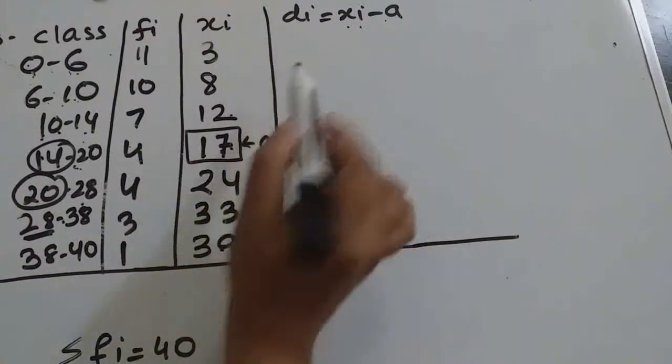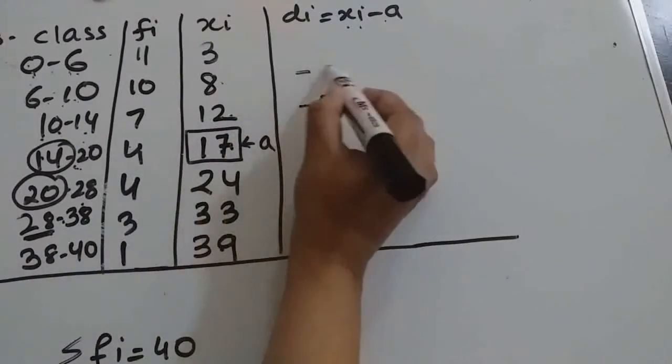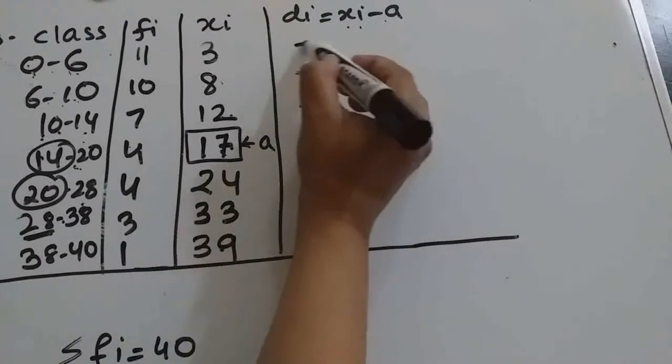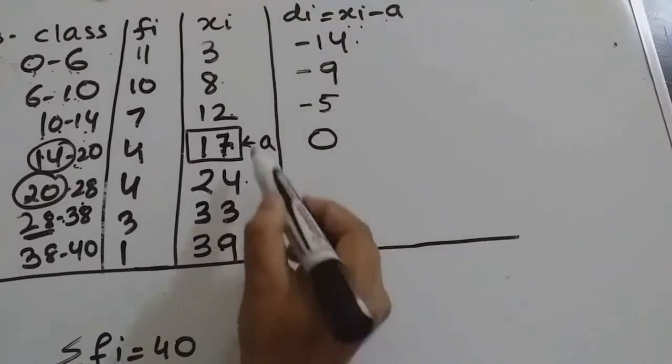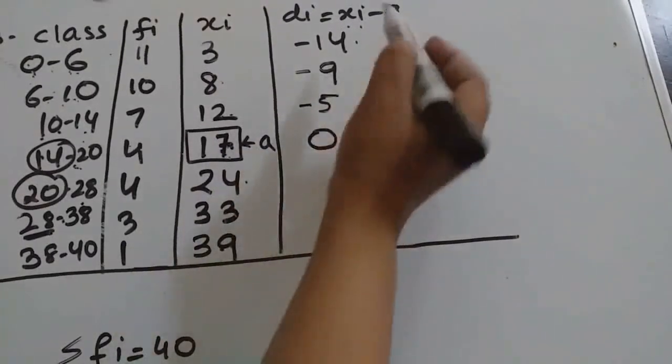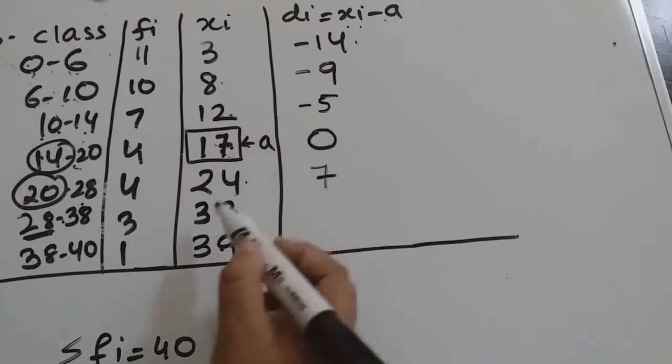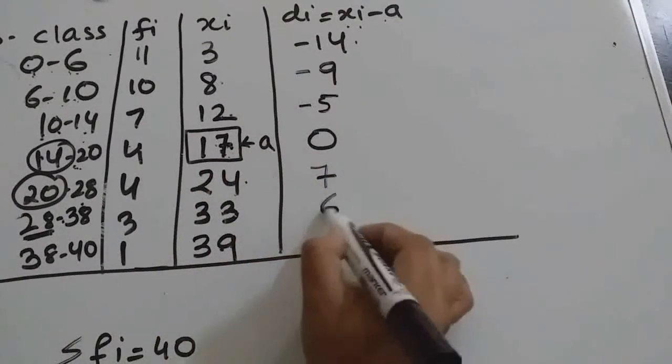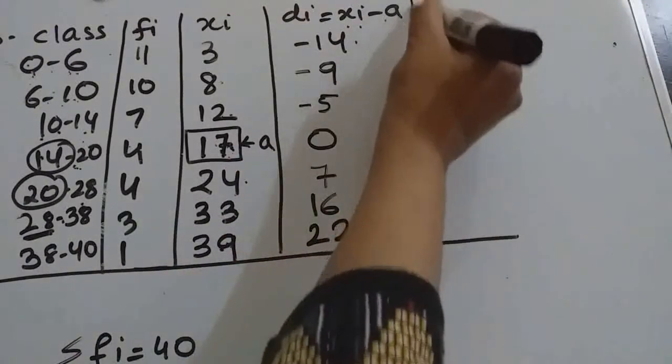Now for the above observations: 12 minus 17 means minus 5. 8 minus 17 means minus 9. Then 3 minus 17 means minus 14. Then here also, 24 minus 17, 33 minus 17, and 39 minus 17 to get all these three values. So 24 minus 17 will be 7, 33 minus 17 will be 16, and 39 minus 17 will be 22.